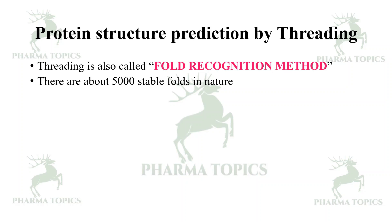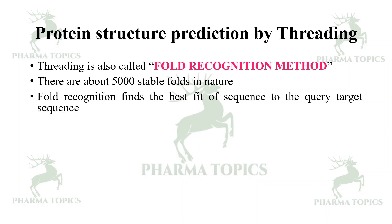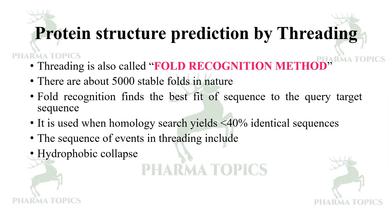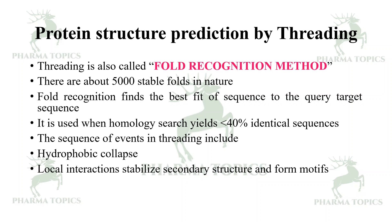There are about 5,000 stable folds in nature. Fold recognition finds the best fit of a sequence to the query target sequence. It is used when homology modeling search yields less than 40% identical sequences. The sequence of events in threading includes hydrophobic collapse, local interactions that stabilize the secondary structure and form motifs, and motifs aggregate to form tertiary structures.